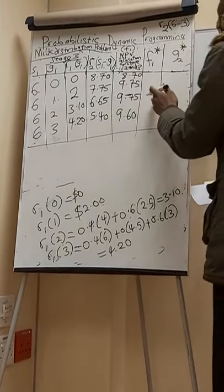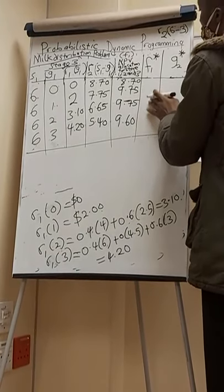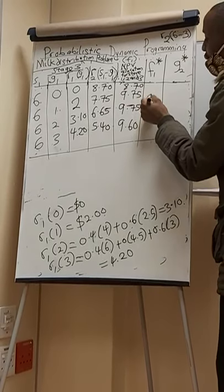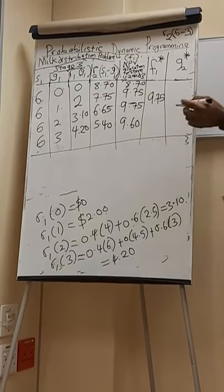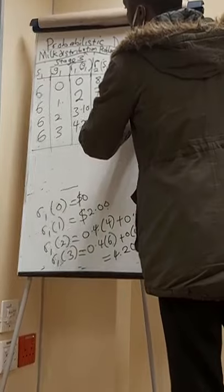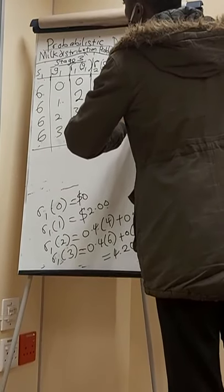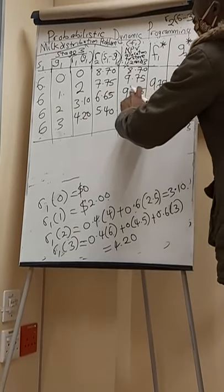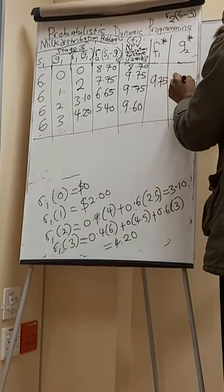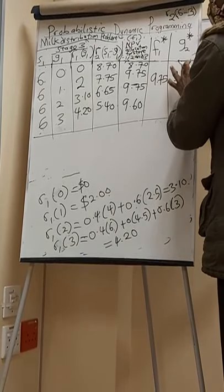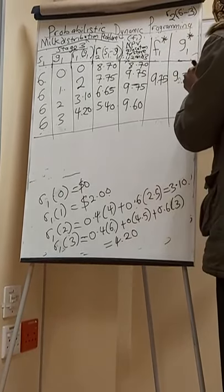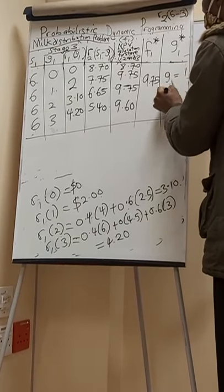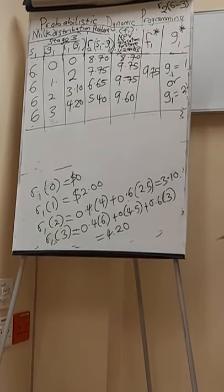Now you can write what is your best, maximum revenue, because you have analyzed all possible options. Which of these revenues gives the highest value? It's 9.75 — we have it twice. The best revenue is 9.75, and the possible allocations that gave us that were: allocate 1 gallon to store 1, or allocate 2 gallons to store 1. So my G1 can be equal to 1, or G1 equal to 2. That is the best allocation.